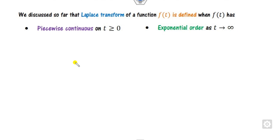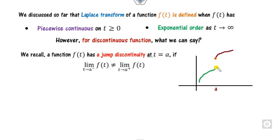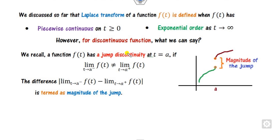What we have discussed so far is finding the Laplace transformation of a function f(t) that satisfies piecewise continuity and exponential order conditions. But what happens if your function is discontinuous — that is, whenever the left-hand limit and right-hand limit are not the same? Whenever these limits are not equal, we call it a jump discontinuity at a point a, and the difference between them is called the magnitude of the jump.